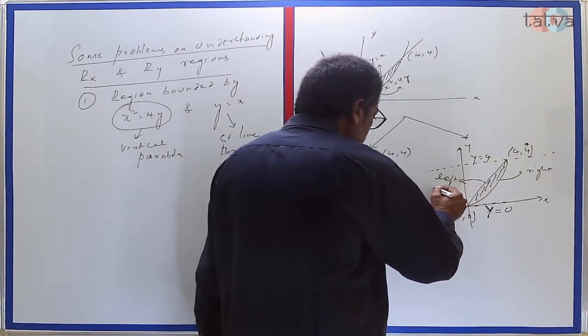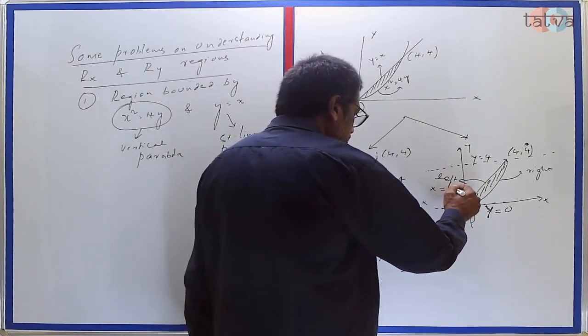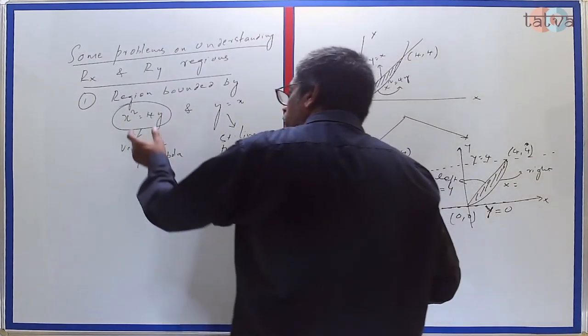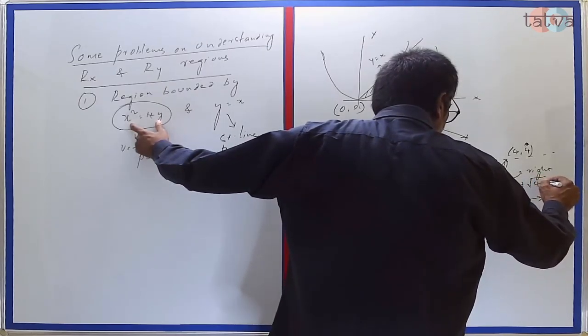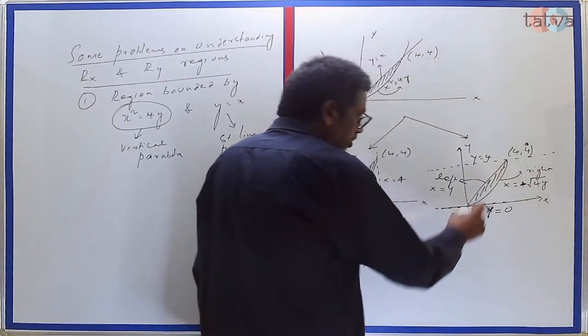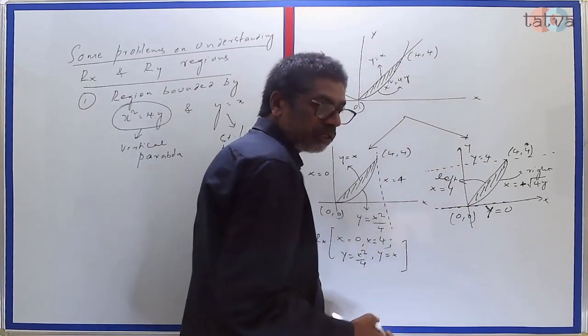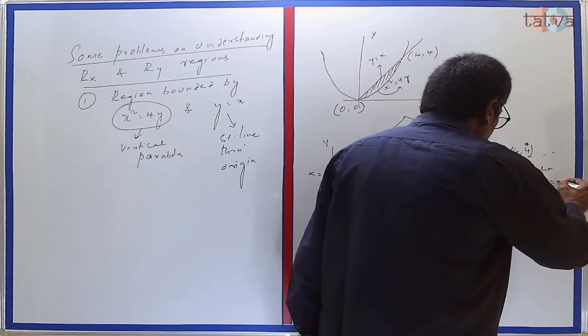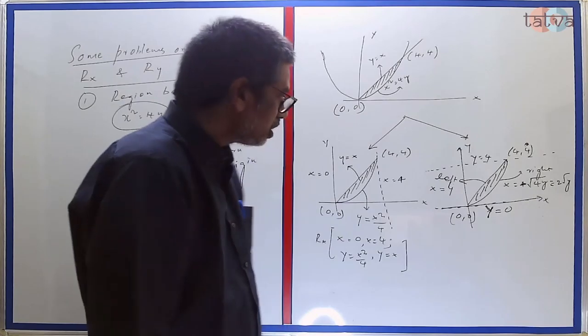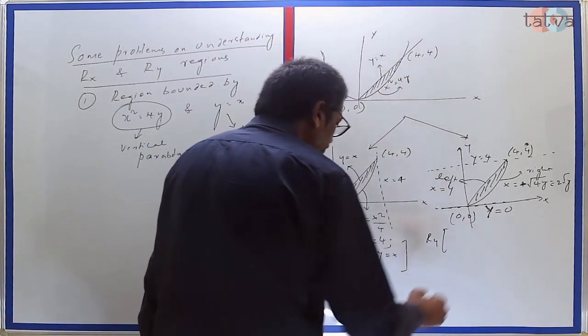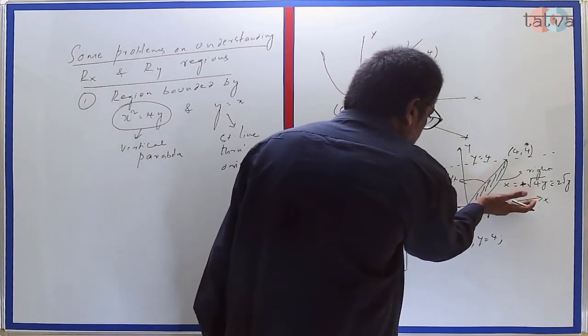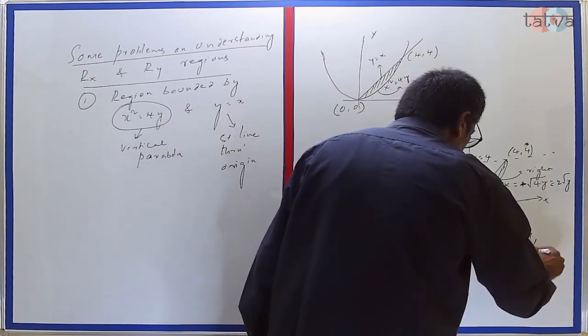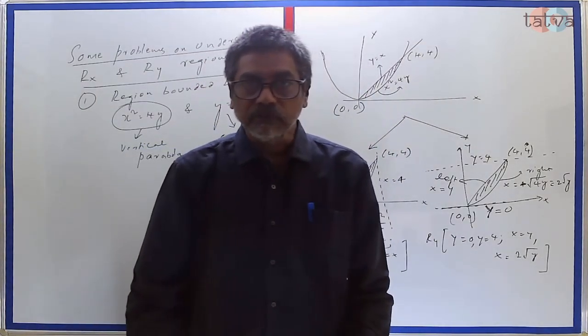Why positive square root? Because the parabola also has a left branch, that will be the negative square root, but that does not exist in this problem. We only have the right branch, so therefore we take the positive square root. So this region in notation can be written as Ry: y = 0 to y = 4, with this line to that boundary. And then comes the left boundary and the right boundary. x = y, x = 2√y. And you fix the limits in the same order before you begin to evaluate.